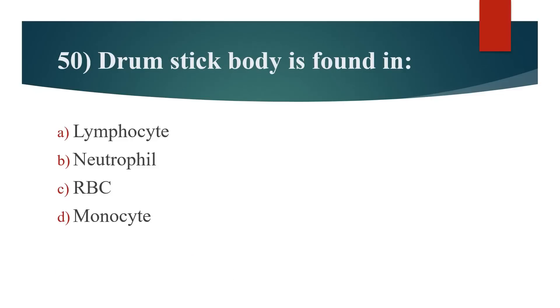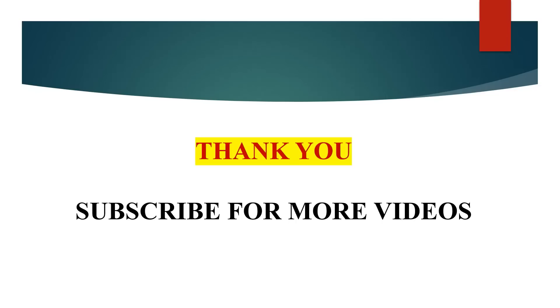Last question (50th): Drumstick body is found in? Option A: Lymphocyte. Option B: Neutrophil. Option C: RBC. Option D: Monocyte. Answer is Option B: Neutrophil. Thank you.